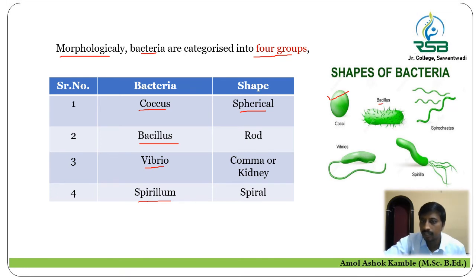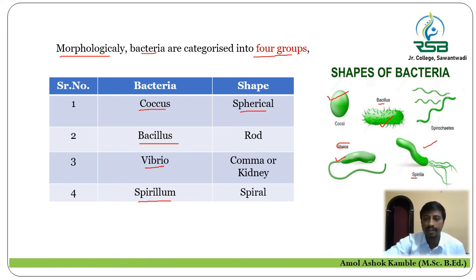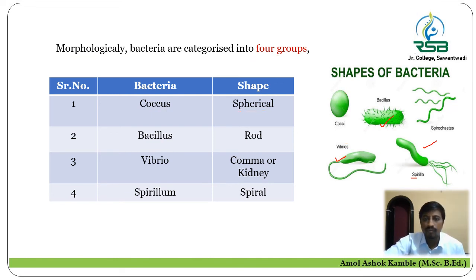Bacteria with spherical shape are called cocci. Bacillus refers to rod-shaped bacteria. Vibrio refers to comma-shaped or kidney-shaped bacteria. Spirillum refers to spiral-shaped bacteria. So bacteria are further classified on the basis of their shapes into coccus, bacillus, vibrio, and spirillum.